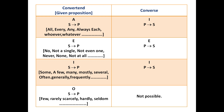Now we come to the table of given propositions and their converses. The given proposition is called the convertent. If the given proposition is an A proposition — where words like all, every, any, always, each, whoever, whatever, etc. are used — and the symbolic form is 'all S is P', then its converse will be an I proposition where the subject and predicate terms are interchanged. So the converse will be 'some P is S'.